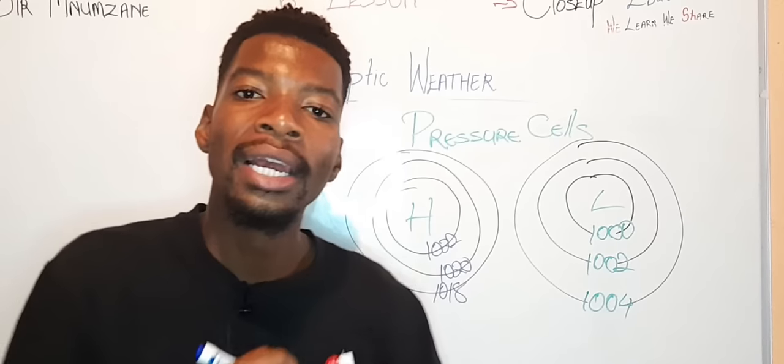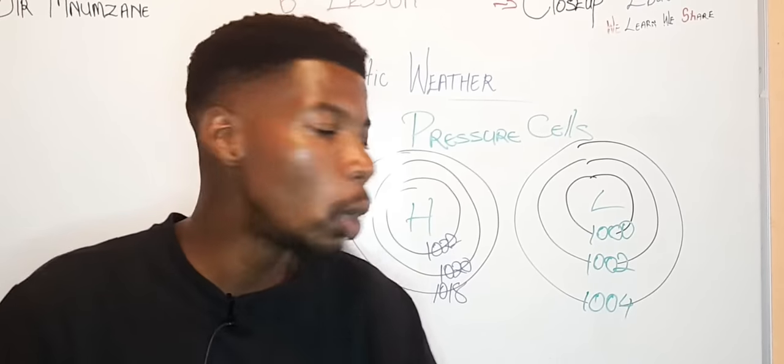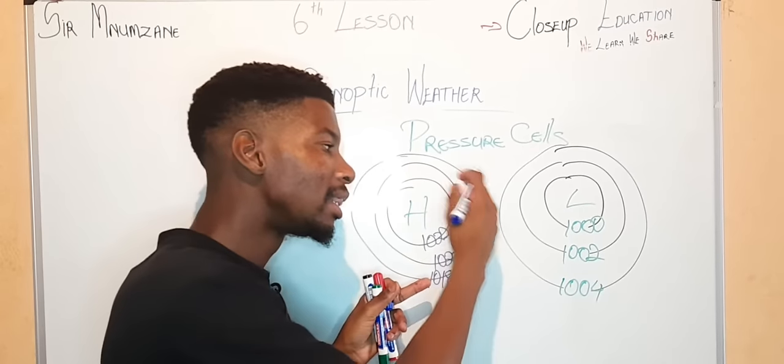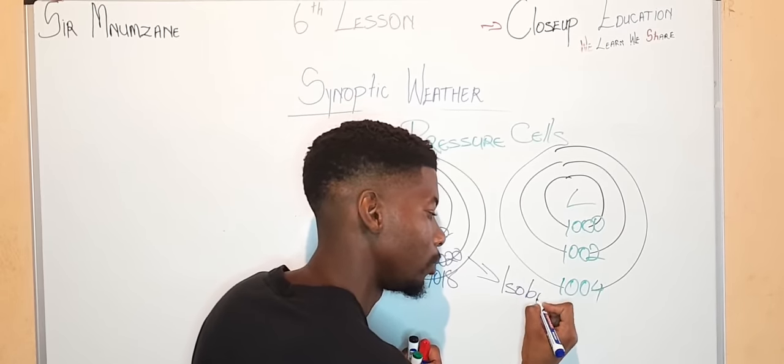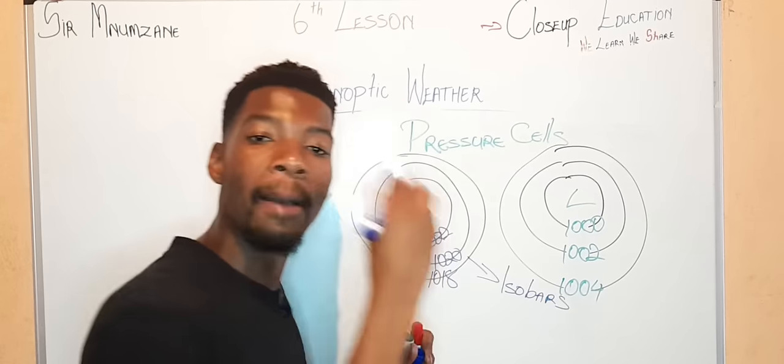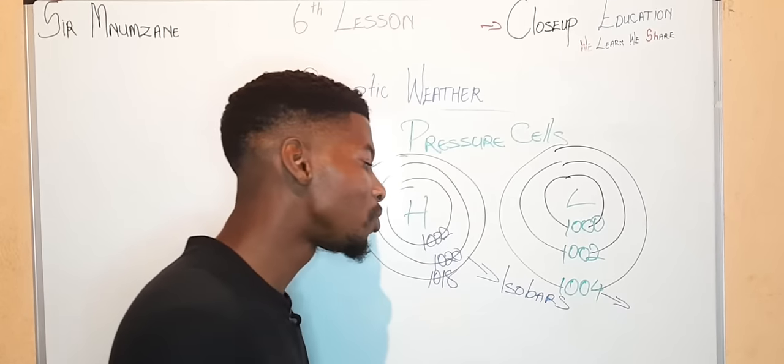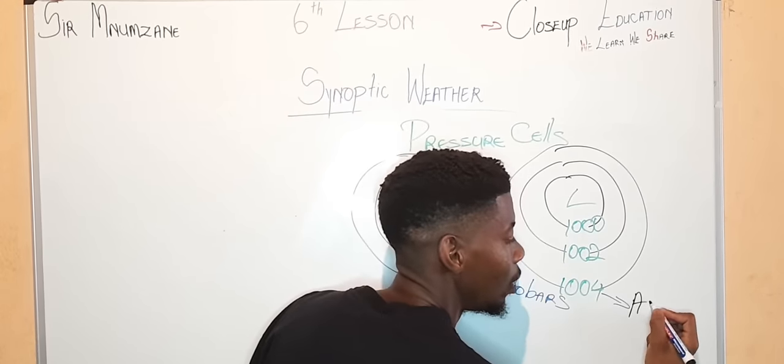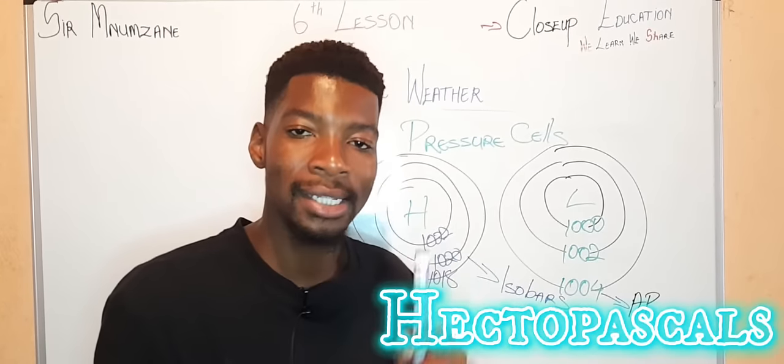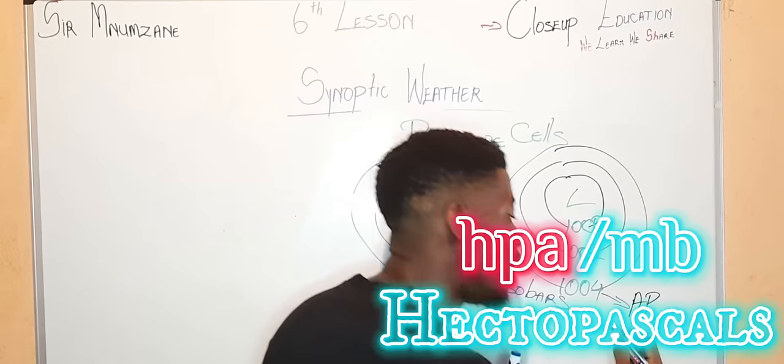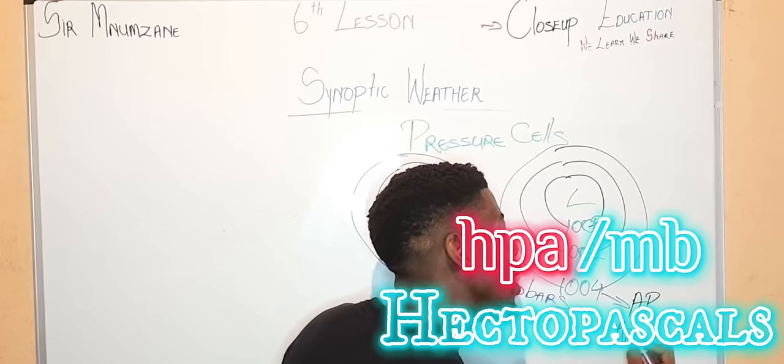Now let's recap. We know one thing. These are isopars. Number two. These are atmospheric pressures which are measured using hectare pascars. They are measured using hectare pascars.